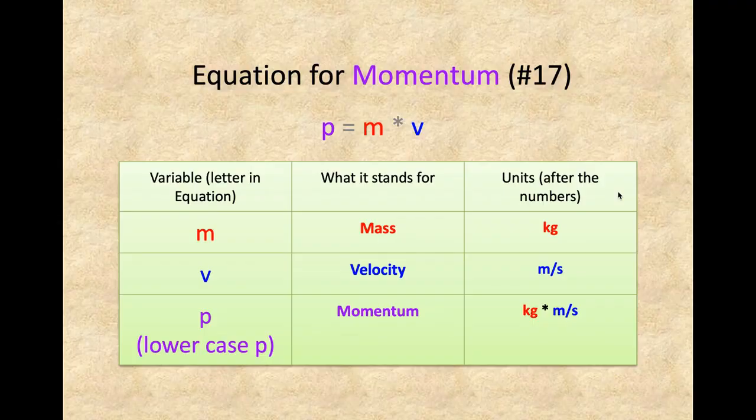Let's do a quick recap on momentum. The variable for momentum is a lowercase p — it doesn't make intuitive sense, but it is what it is. The m stands for mass and the v stands for velocity. The unit for mass is kilograms and the unit for velocity is meters per second, so your unit for momentum is kilograms times meters per second.